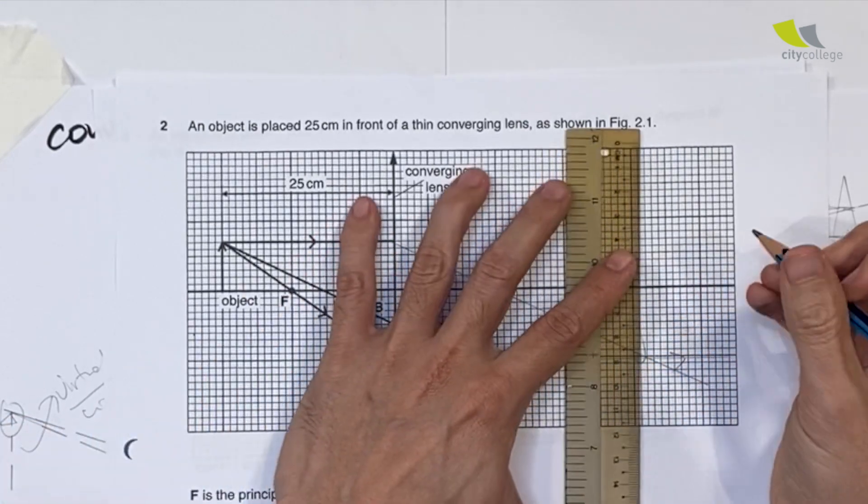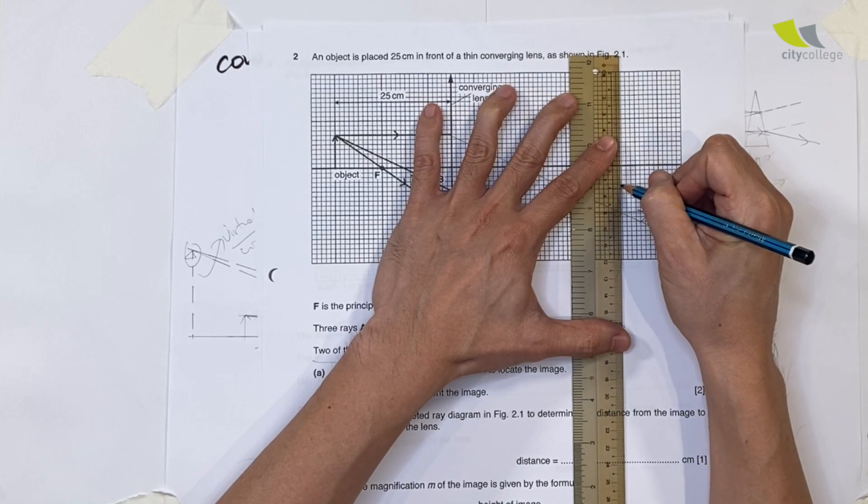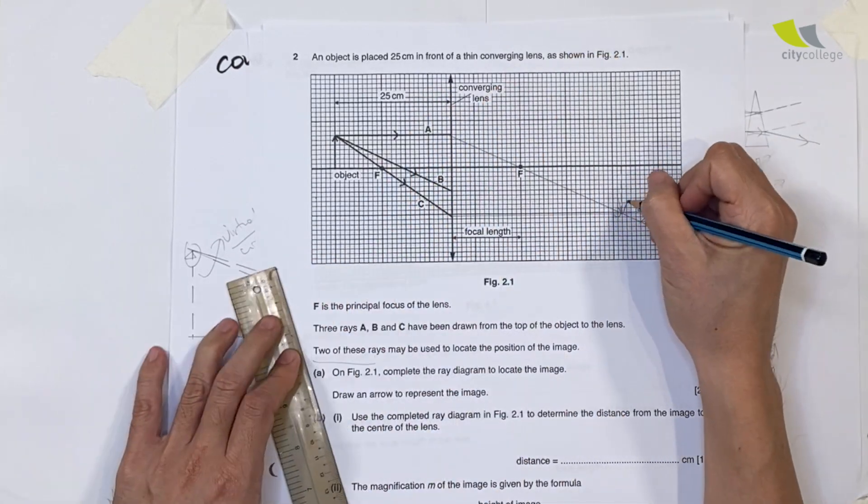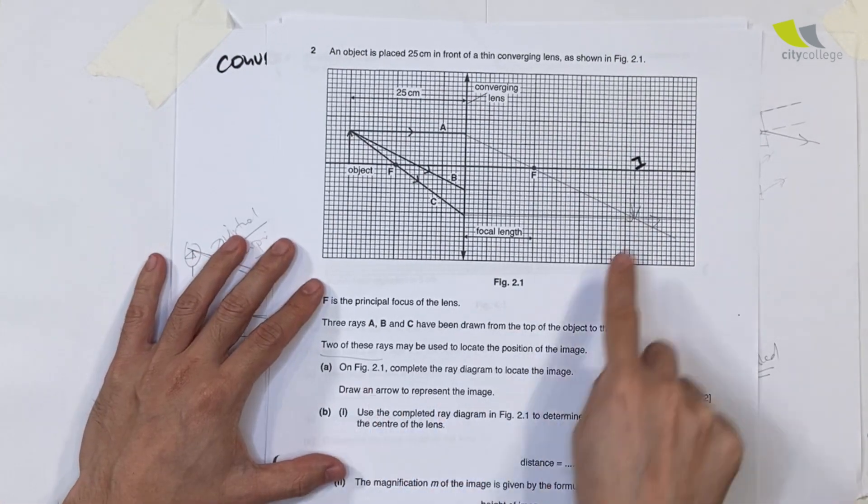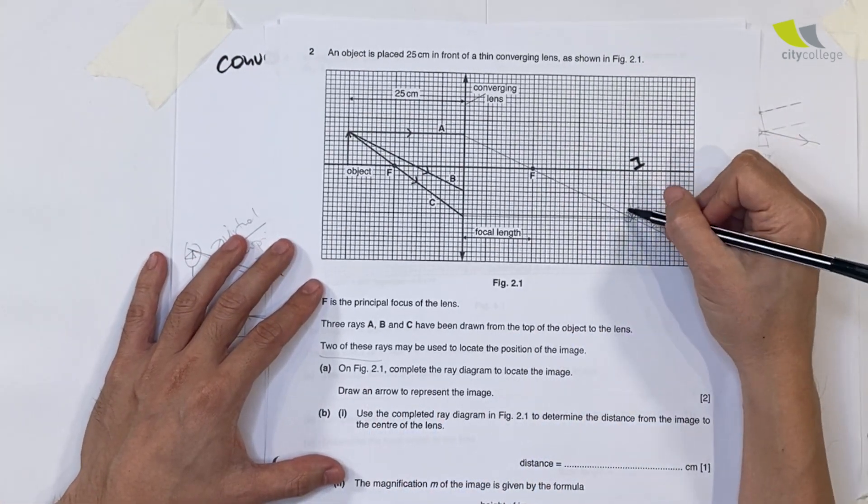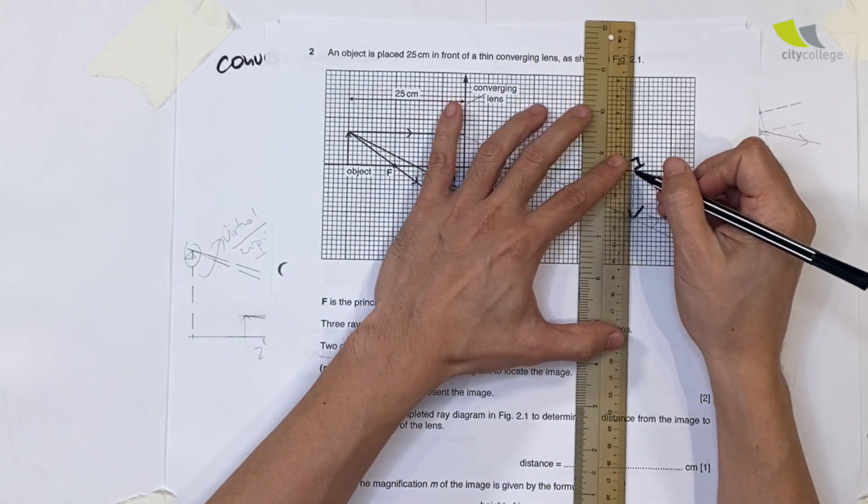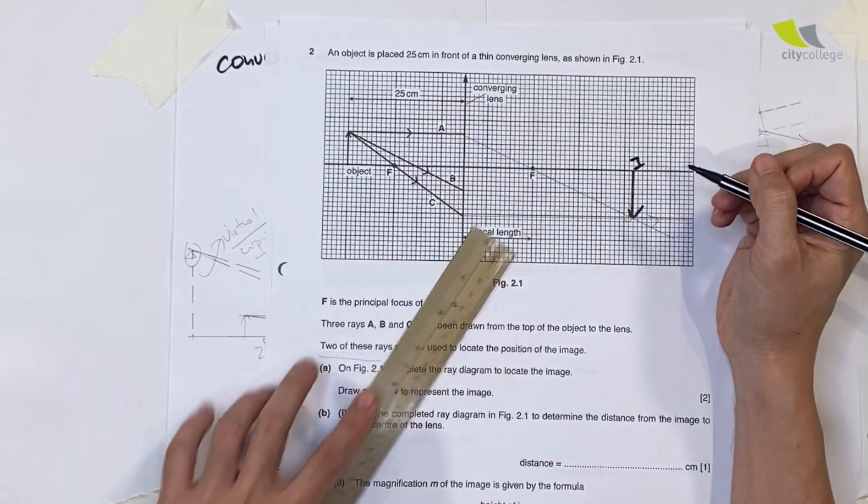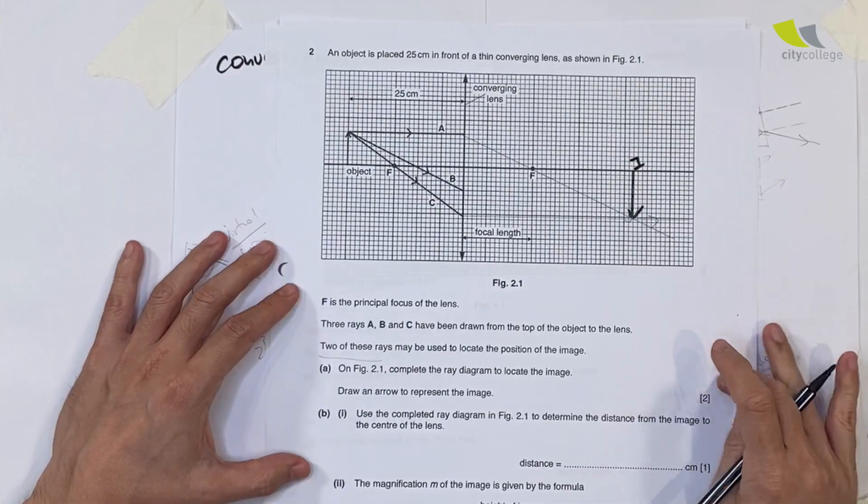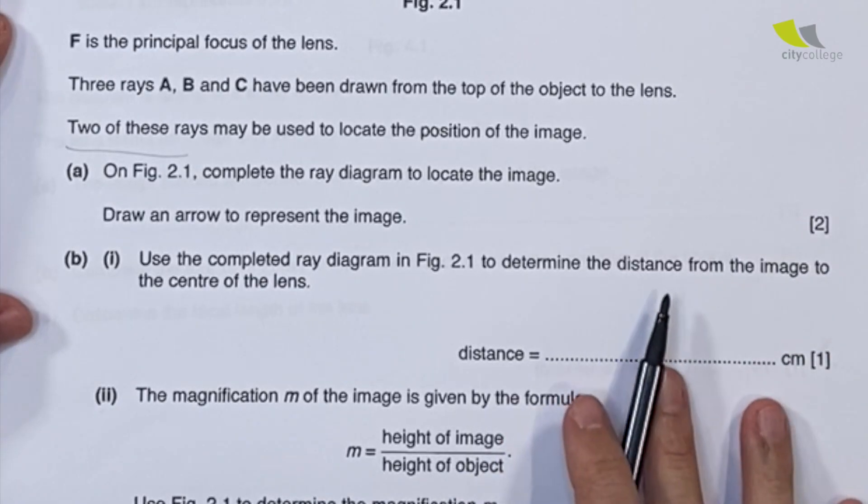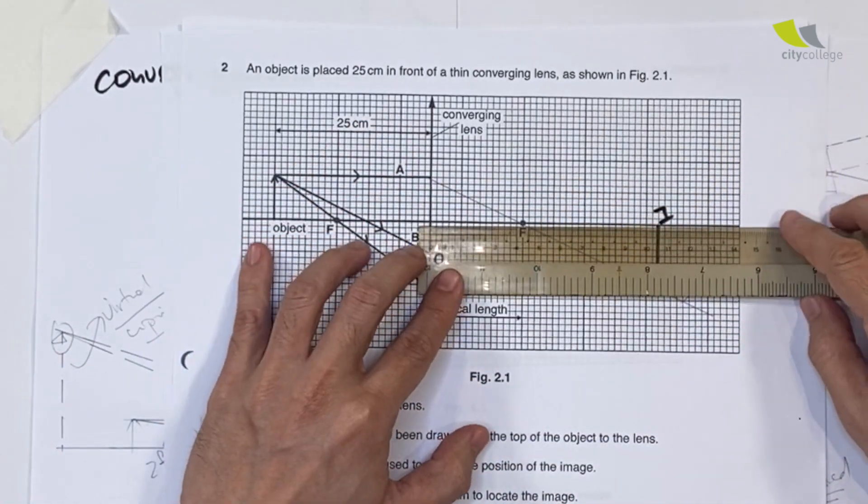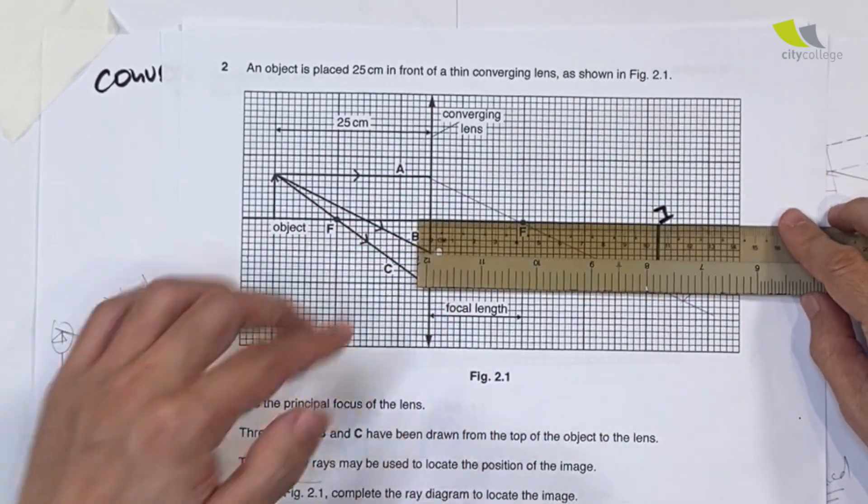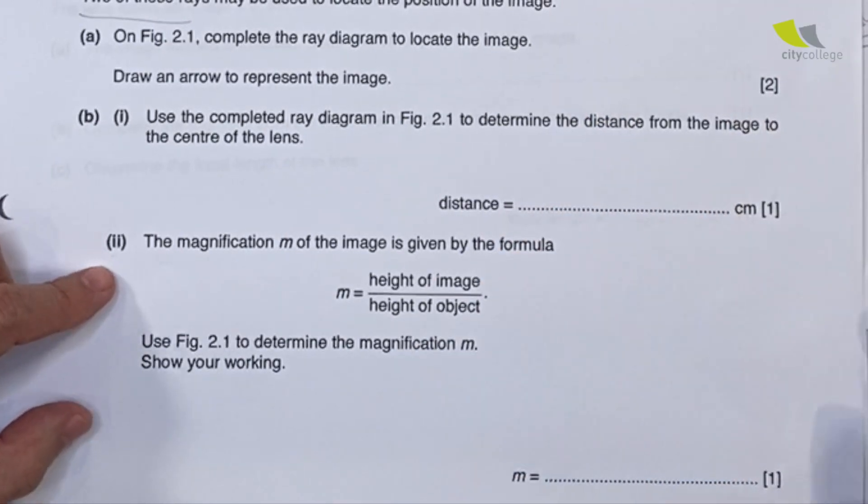Just slightly above here, and you draw one line like this. Where the two lines cut will be your image. I label it as I and draw an arrow to represent the image. This is your image - I get my two marks. Determine the distance from the image to the center of the lens - you measure this length. Magnification is given by the formula - this is easy, I'm not going to go through it.